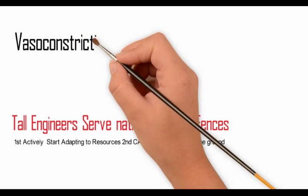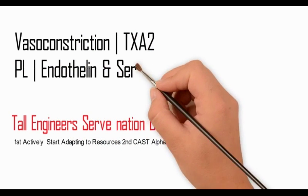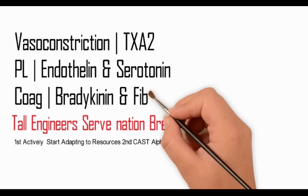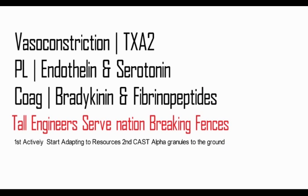The initial vasoconstriction occurs due to the effect of thromboxane. The vasoconstriction is maintained during platelet aggregation by endothelin and serotonin. Vasoconstriction is maintained during the coagulation phase by bradykinin and fibrinopeptides.